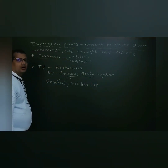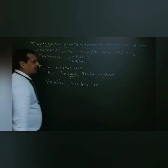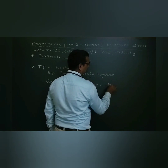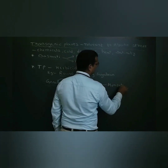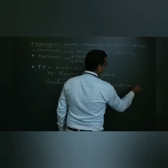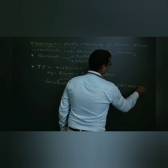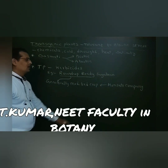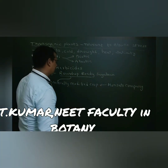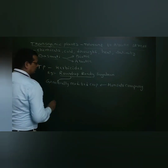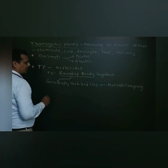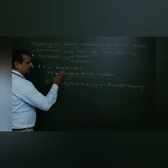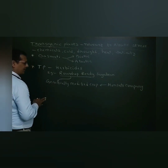This crop was developed by Monsanto Company at California. The genetically modified crop is Roundup Ready Soybean.